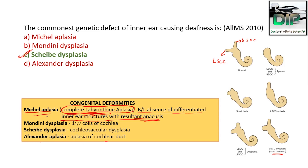Here are some tricks to remember these terms. Mondini — think of 'mundi halana, mundi halamu' — something related to coiling. So there is decreased coiling of the cochlea in Mondini dysplasia. Scheibe dysplasia — Scheibe sounds like Shiva, and Shiva is a very well-known God, so Scheibe dysplasia is the most common genetic defect of the inner ear causing deafness. It is cochleosaccular dysplasia — dysplasia of the cochlea and the saccule. For Alexander dysplasia, there is a 'D' in Alexander — it's related to duct, the cochlear duct, and there is aplasia of the cochlear duct.